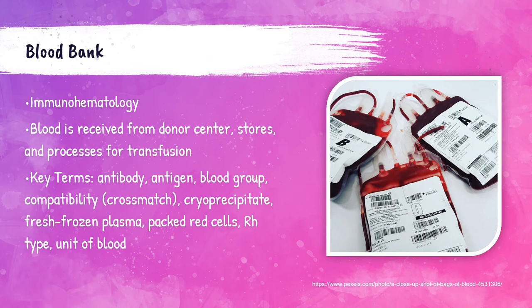Additional blood bank key terms include: cryoprecipitate — a blood product rich in clotting factors; fresh frozen plasma — made from the liquid portion of blood; packed red blood cells — red blood cells separated from plasma for transfusion; and Rh type — an inherited protein on the surface of red blood cells; if present the patient is Rh positive, if absent Rh negative. A unit of blood is donated, tested in the blood bank to ensure it is free of diseases and compatible for patients, and then transfused to the patient who needs it.